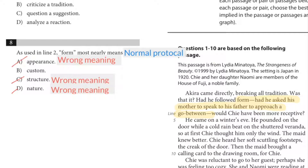When you read the question, you have to go back and re-read the details in and around it. There's the word — it's 'form.' He had asked his mother to speak to his father to approach a go-between. So my guess was that 'form' mostly means the normal protocol, which is not appearance. Form could mean appearance, structure, and nature — those are all possible definitions or synonyms of the word form.